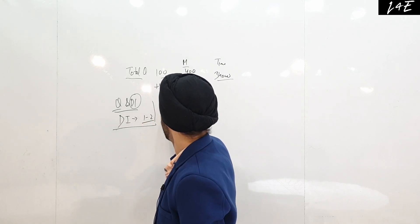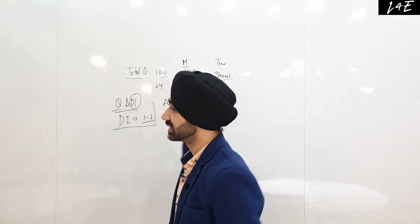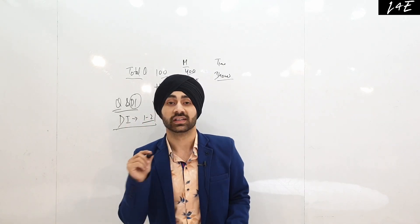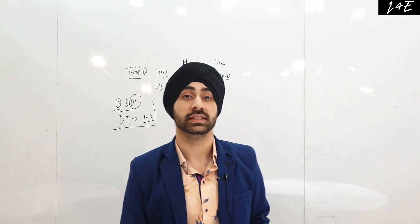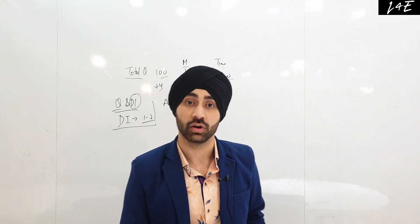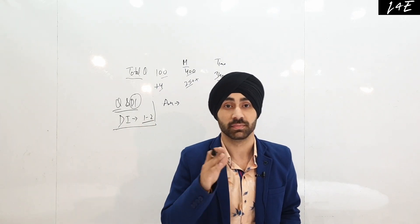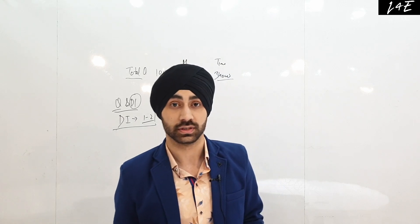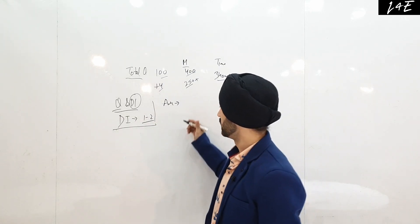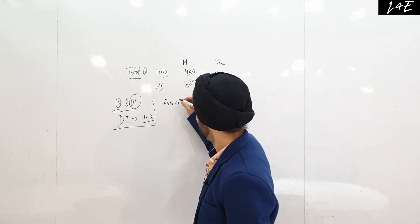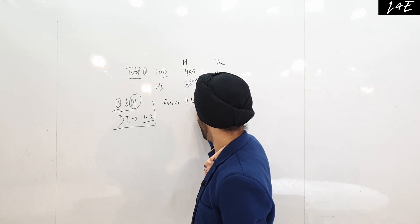Your major focus area in Quant should be Arithmetic: Time and Distance, Time and Work, Ratio, Simple and Compound Interest (SICI), Profit and Loss, Averages, Mixtures and Allegations, and Percentages. You will get somewhere around 11 to 12 questions from Arithmetic alone.